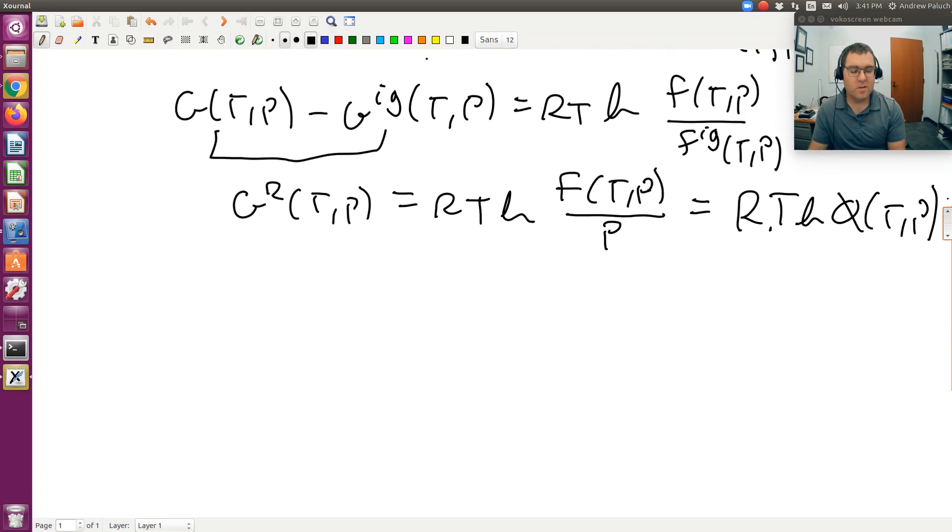Well, remember G is equal to H minus TS. So therefore G residual is equal to H residual minus TS residual. So G residual is equal to H residual minus TS residual. So I can calculate that using the data provided in the table.